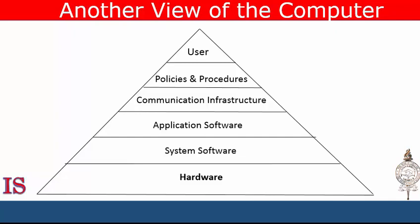The software that actually manages all of this equipment is called system software. You might say that system software serves the hardware directly while application software serves the user. The system software serves as a link between the users and the hardware. Application software, on the other hand, serves user needs.